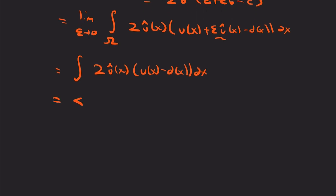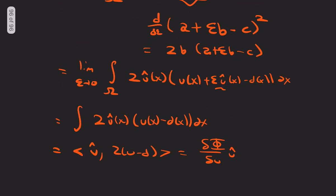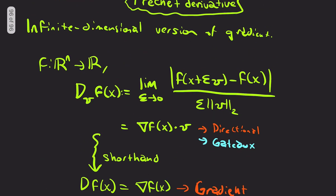And this is 2 u-hat(x), u(x) - d(x) dx. Now, you can also rewrite this as u-hat dotted into 2(u - d). Now, similar to up here, where we take the directional derivative and dot it into v.